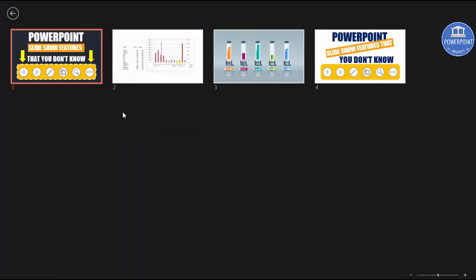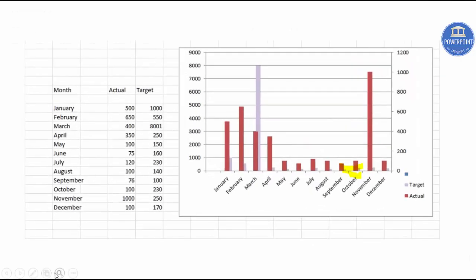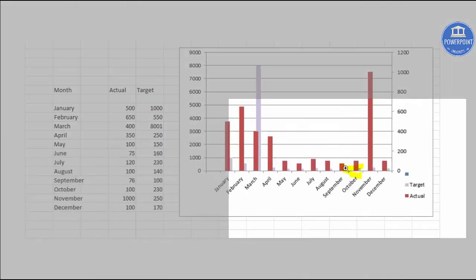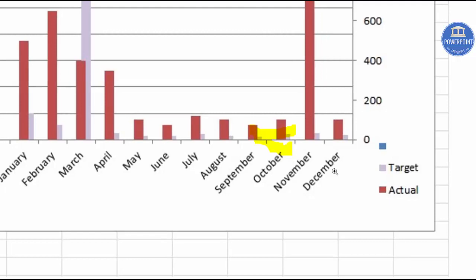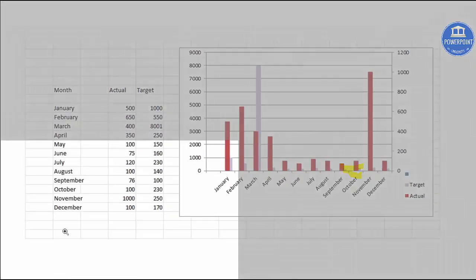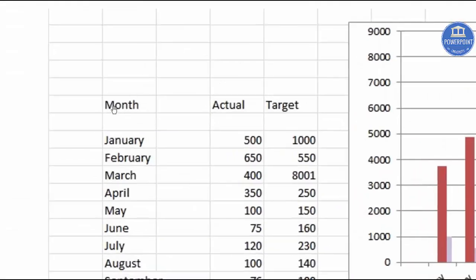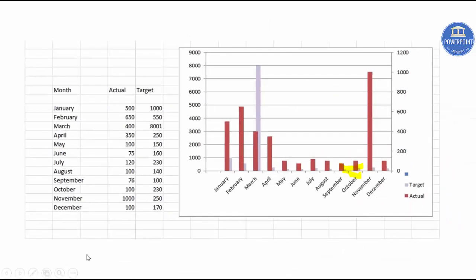If you want to go to a specific slide, use that feature. The next one is the magnifier. Sometimes during presentations the fonts are very small and the audience complains they cannot see clearly. In that case you can use the magnifier feature. When I click it, you can see it zooms in on that area. To bring it back to normal, just press the escape key once and it returns to normal view.